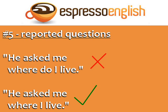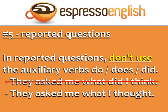Number five: reported questions. "He asked me where do I live" is incorrect. The correct sentence is "He asked me where I live." This sentence is an example of a reported question — we are talking about a question someone asked in the past. In reported questions, don't use the auxiliary verbs do, does, or did. Here's another example: "They asked me what did I think" is incorrect. The correct sentence is "They asked me what I thought."